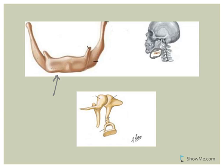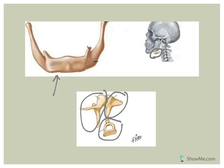The auditory ossicles include the stapes, the incus, and the malleus. You have each set of three in each inner ear — they help amplify sound waves.